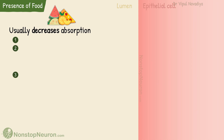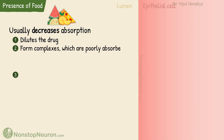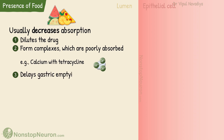There are a few reasons behind this. One, the food dilutes the drug, which slows down the rate of absorption. Second, it may form complexes with drugs that are poorly absorbed — for example, calcium in milk makes a complex with tetracyclines, which are poorly absorbed. And finally, food delays gastric emptying, which as we saw earlier, delays absorption. Thus usually, food retards absorption.